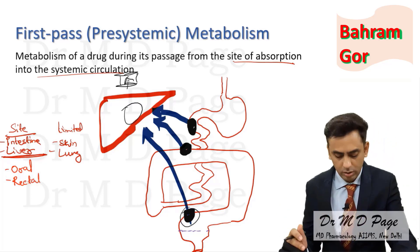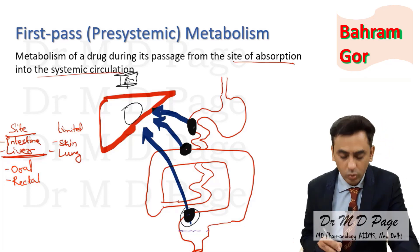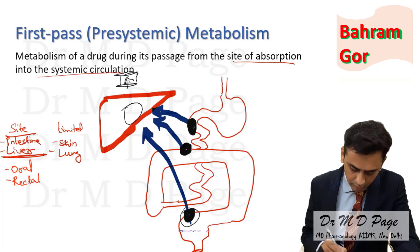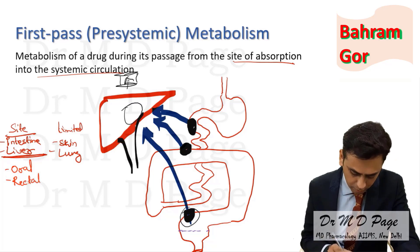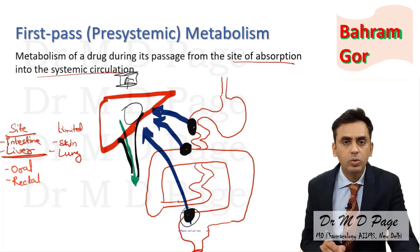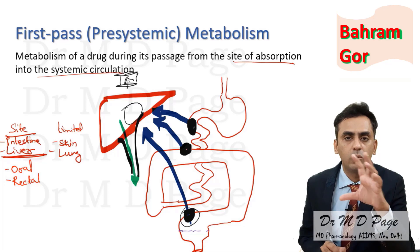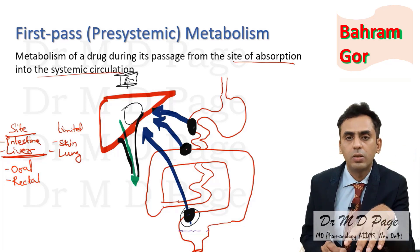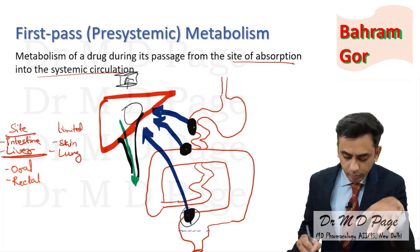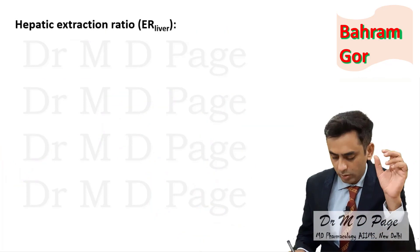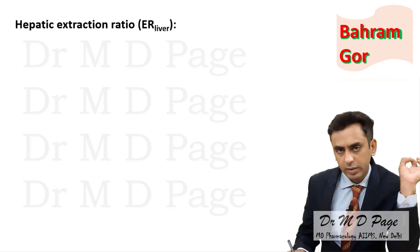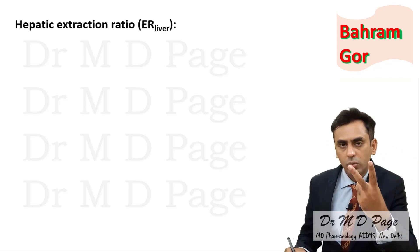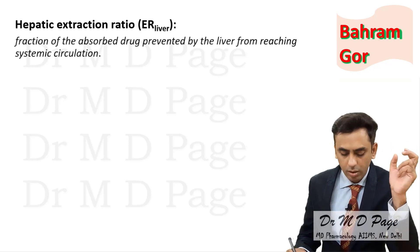After getting metabolized in the intestine and liver, the drug will reach systemic circulation and go to various sites. One more thing to know: the liver, apart from metabolizing the drug, also dumps the drug into bile. So the liver is doing two things — metabolizing the drug and dumping it into bile. Hence, there is a term known as hepatic extraction ratio, which refers to the drug being extracted by the liver through both metabolism and dumping into bile.